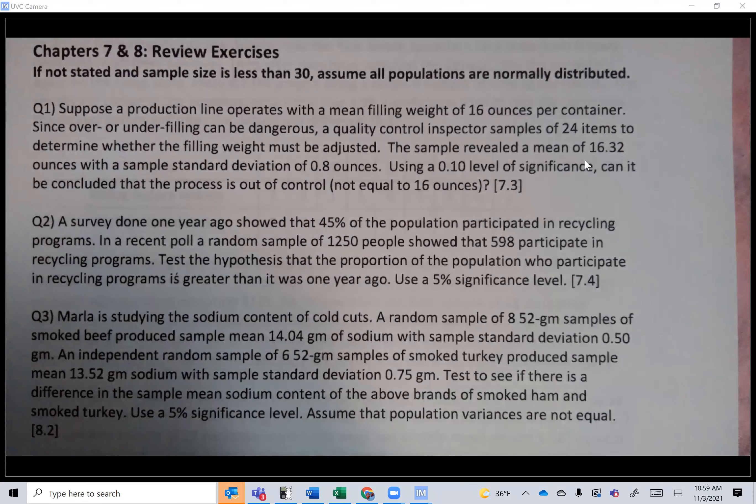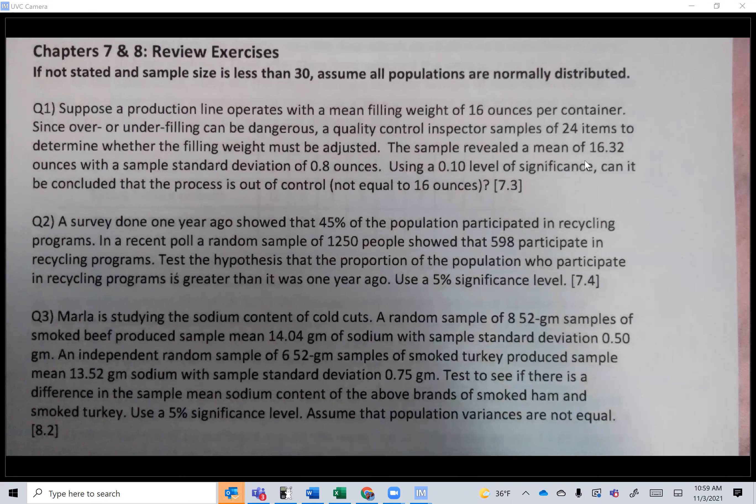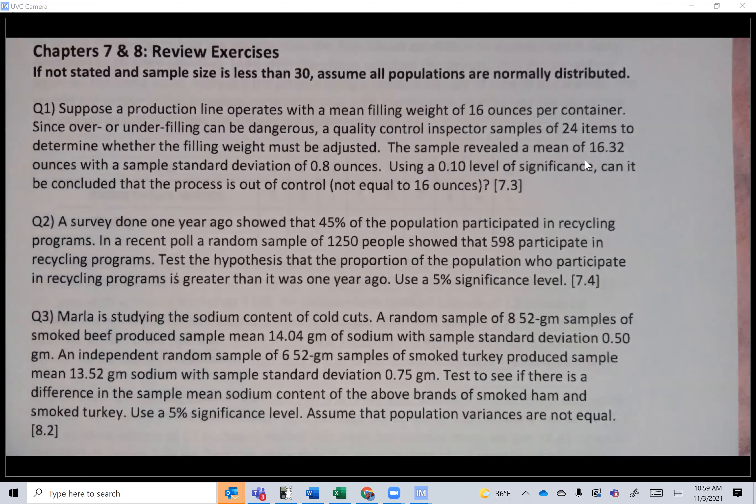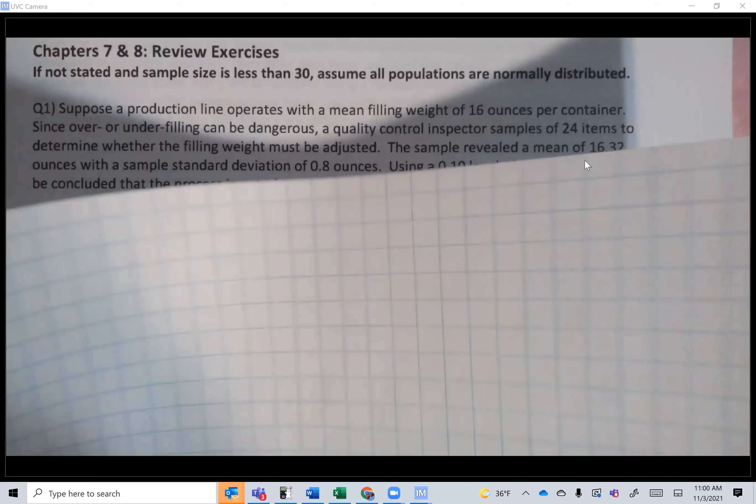Suppose a production line operates with a mean filling weight of 16 ounces per container. Since over or under filling can be dangerous, a quality control inspector samples 24 items to determine whether the filling weight must be adjusted. The sample revealed a mean of 16.32 ounces with a sample standard deviation of 0.8 ounces. Use a 0.10 level of significance. Can it be concluded that the process is out of control? I gave you a hint: not equal to 16 ounces. If it's not 16, we need to readjust.